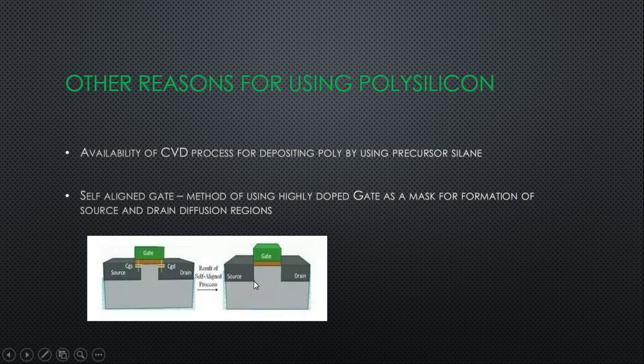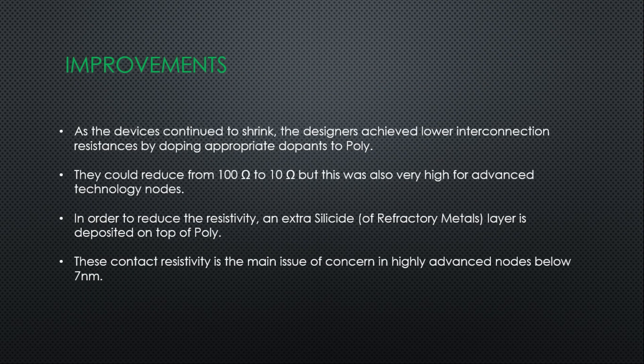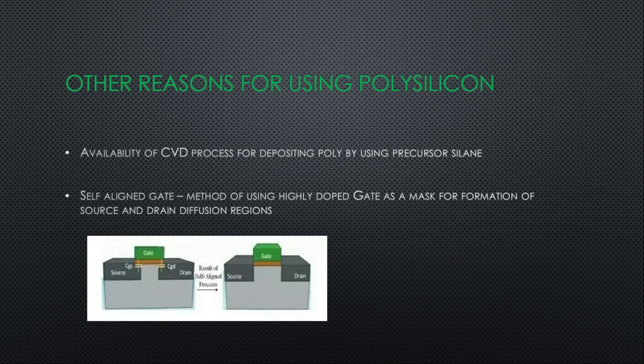There are some problems with using polysilicon. One is its resistance. As devices continued to shrink, designers achieved lower interconnection resistance by doping appropriate dopants into poly, reducing resistance from 100 ohms to 10 ohms. But this was still very high resistance for highly advanced nodes. In order to reduce resistivity, an extra silicide layer is deposited on top of the polysilicon — silicide being a combination of polysilicon with some refractory metals.